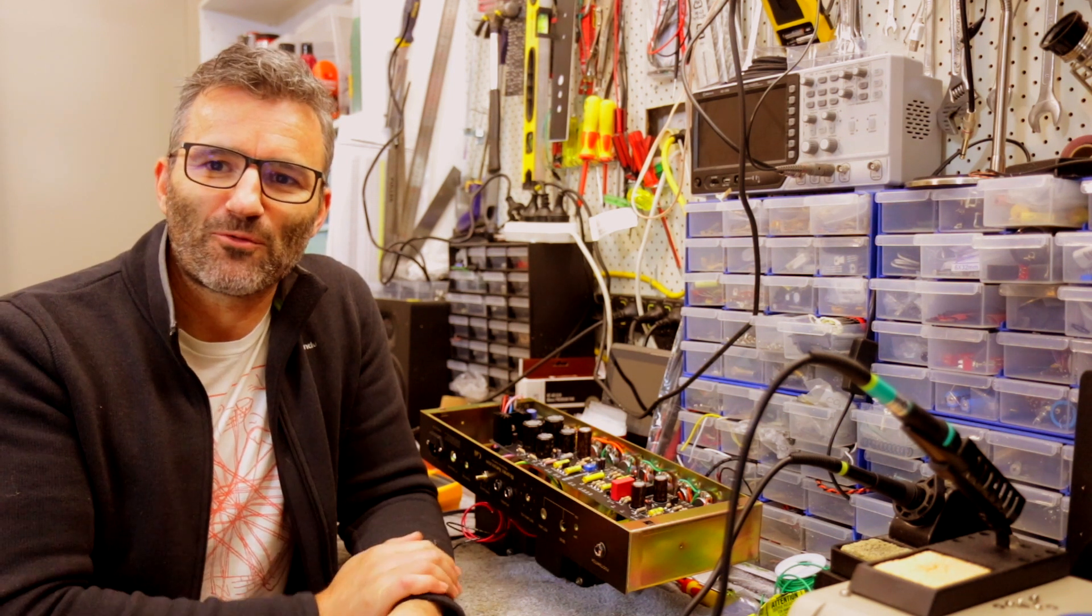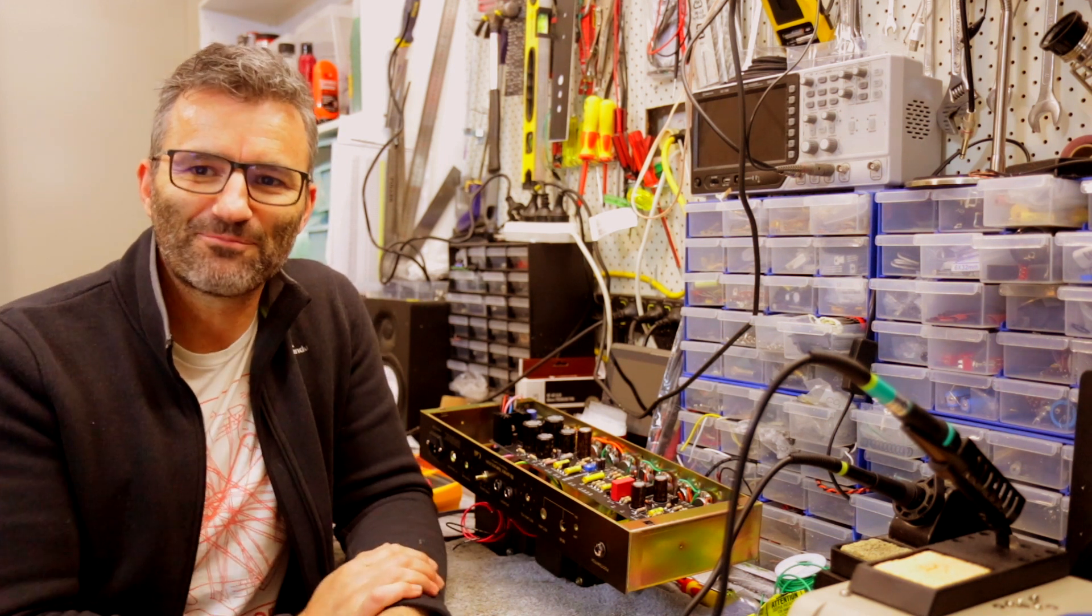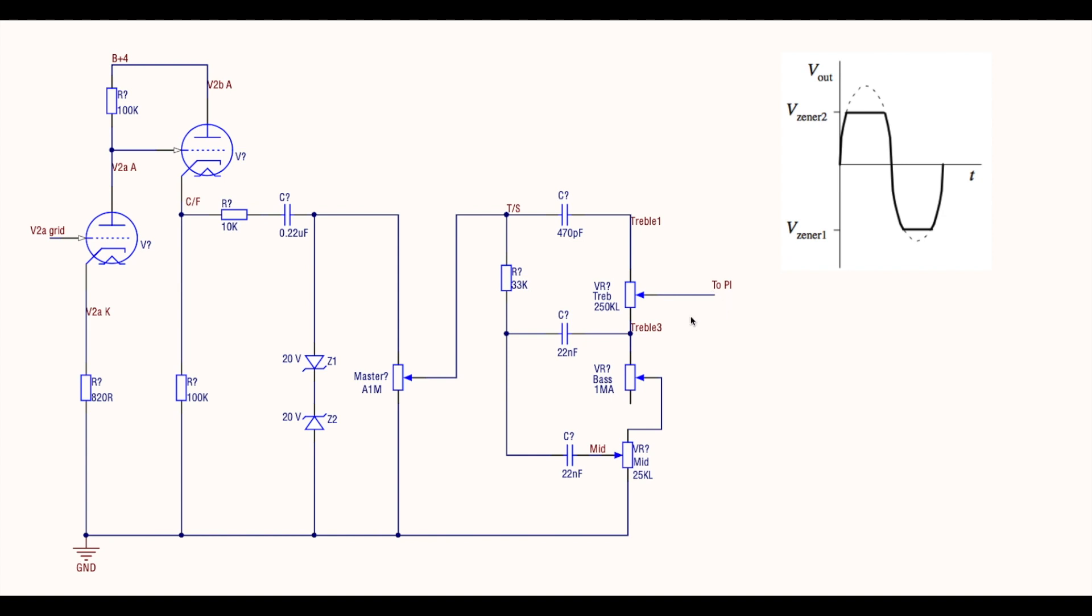The first thing we'll do is step through a little bit of theory so that by the time we get to looking at the scope, hopefully it makes some sense. To explain what the Zener diode's doing from a clipping perspective, I just drew up a quick schematic here which is the part of the amp where they come into effect. So what we've got here is a pretty standard setup for a Jose clipping Marshall.